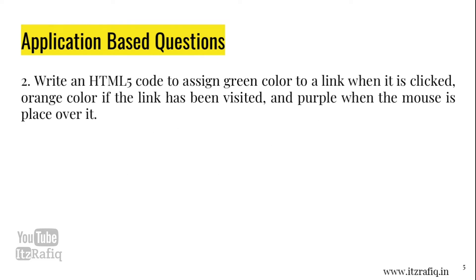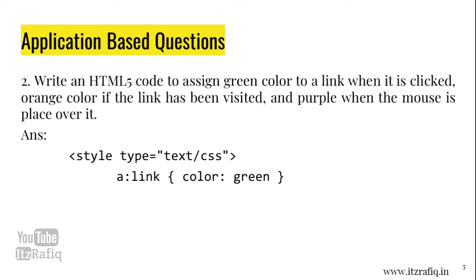Question number 2: Write an HTML5 code to assign green color to a link when it is clicked, orange if the link has been visited, and purple when the mouse hovers over it. For this purpose we write CSS code. The first line is: style type='text/css'. Then we write a:link — the link pseudo-class is used when it is clicked — and inside curly braces: color: green.